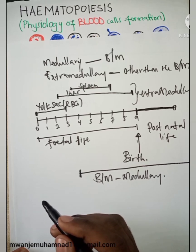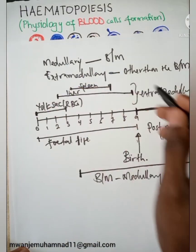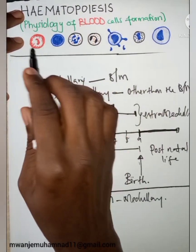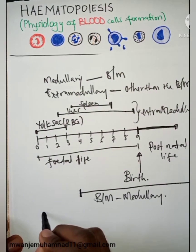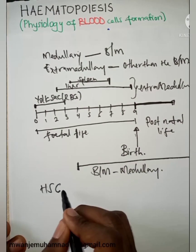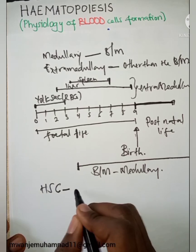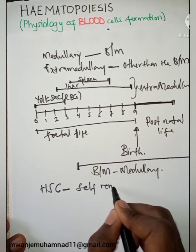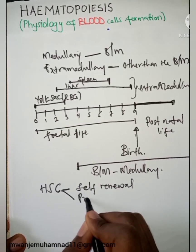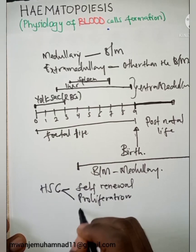The hematopoietic stem cell gives rise to all of the blood cells. The hematopoietic stem cell is the first in the process, and this has some good characteristics of self-renewal, proliferation, and differentiation.